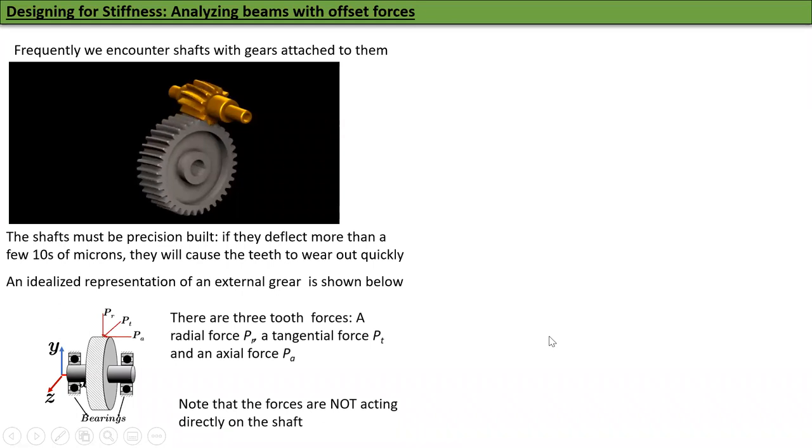There are three tooth forces. The radial force PR tries to push the gears apart. The tangential force PT on the gear is the one that is driving the gear. That is the force you can compute most easily if you know the horsepower. The axial force PA causes the gear to separate sideways and is there only for helical gears. If it's a spur gear, axial force is zero.